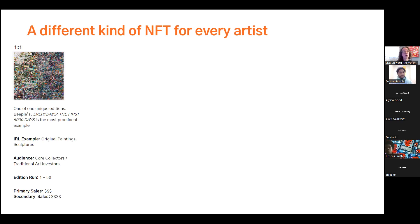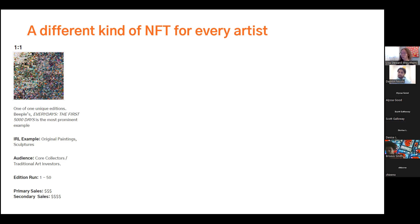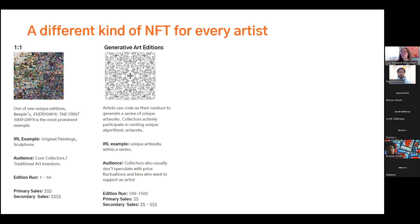I'm going to go over four different types. The first type is a one-of-one. The most famous one-of-one NFT work right now is Beeple's 'Everydays: The First 5,000 Days' — this is the one that had record-breaking auctions at an auction house. I want to say it went for $69 million. It's a one-of-one; there's only one that exists. There are IRL examples of one-of-one works — we're talking about original paintings or sculptures. Your audience here is going to be your core collectors and traditional arts investors, people who are interested in art for the sake of art. Your primary sales can be quite high, and depending on your success as an artist, your secondary sales could potentially be even higher.